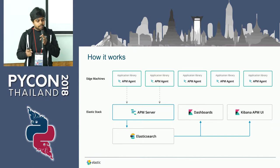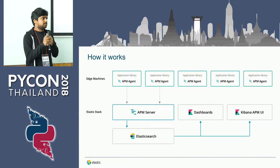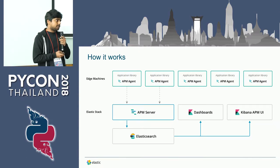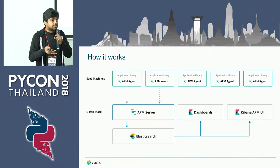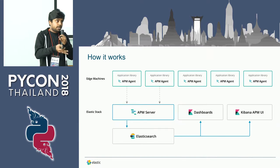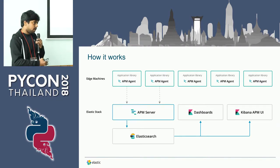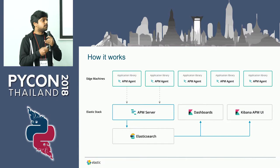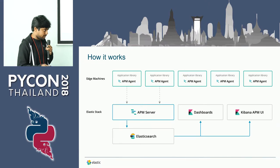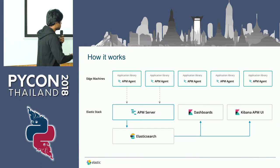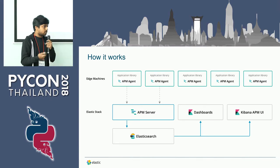How it really works: there are application libraries integrated into your Python or Django app — just a simple one-line statement in your settings file. It then talks to something called the APM server, which sends the data and traces of your application, all the requests and API calls, into Elasticsearch. There are a lot of terms here, but we will see exactly what's happening in the demo.